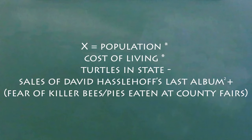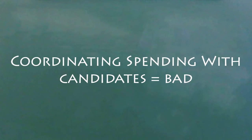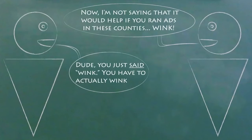Các yếu tố của chiến dịch là gì? 6 yếu tố cần thiết của một chiến dịch tiếp thị thành công: 1. Mục tiêu — bước quan trọng nhất trong quá trình lập kế hoạch là xác định đối tượng của bạn. 2. Danh sách. 3. Đề xuất giá trị. 4. Yêu cầu kêu gọi hành động. 5. Phương thức giao hàng. 6. Theo dõi.